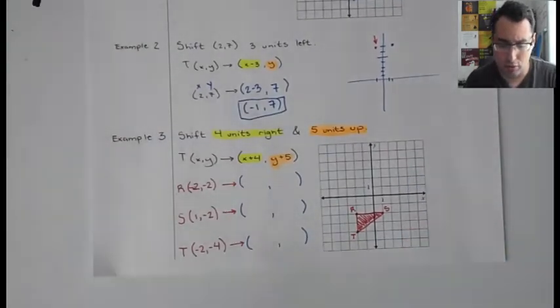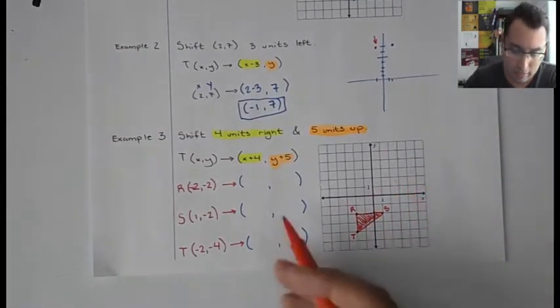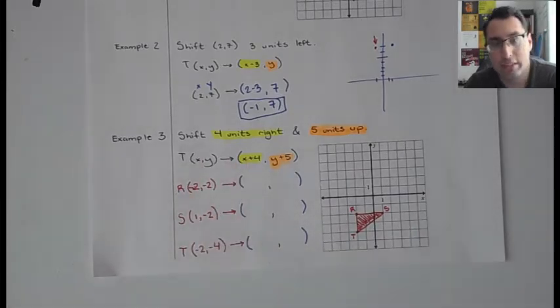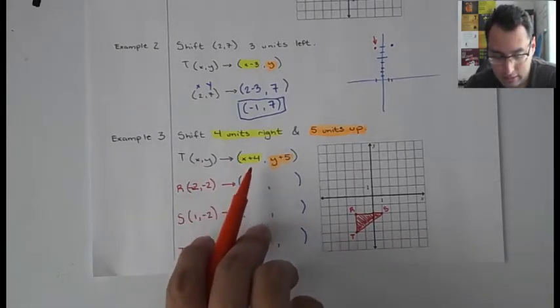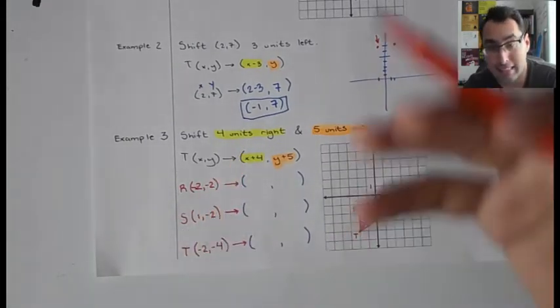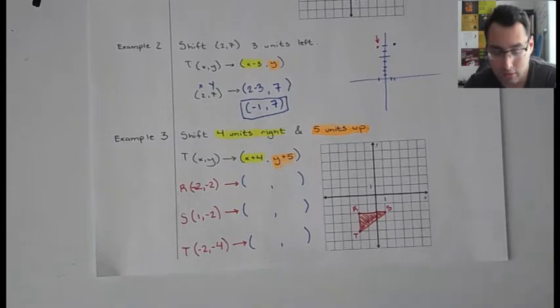Third example is we're going to prove this using both the graph and also our mappings here. This is going to say that we're going to move this triangle RST four units to the right. So that's why I've highlighted that in yellow, so you can know that those two things, x plus four and four units to the right means the same thing. And five units up. So that is represented by putting y plus five.